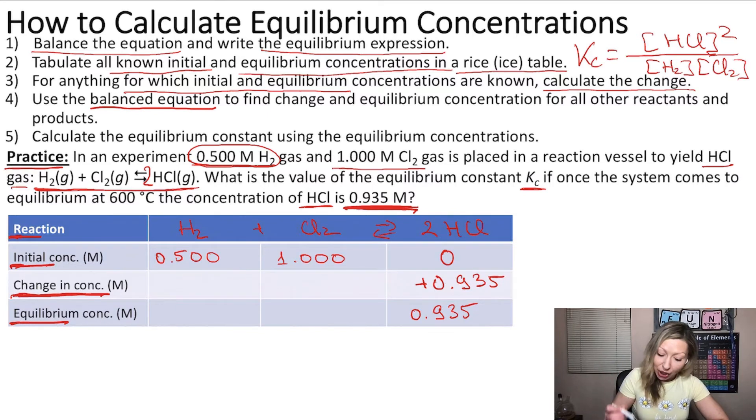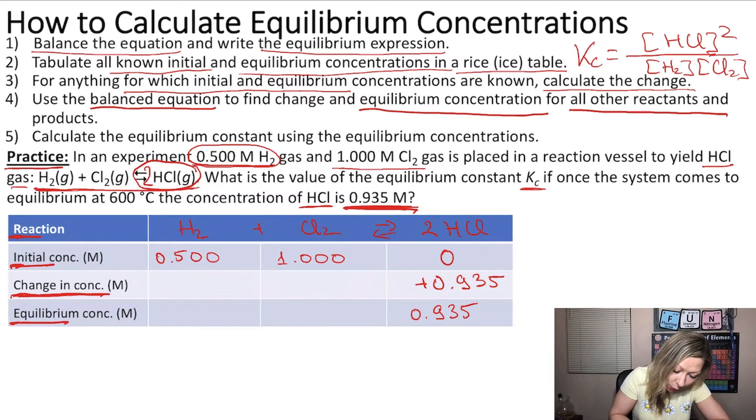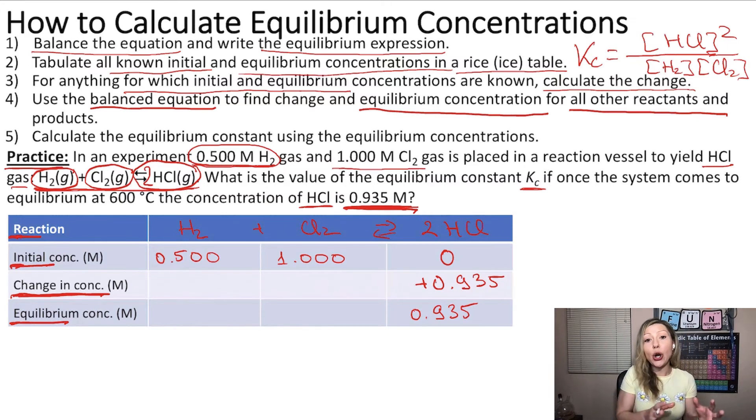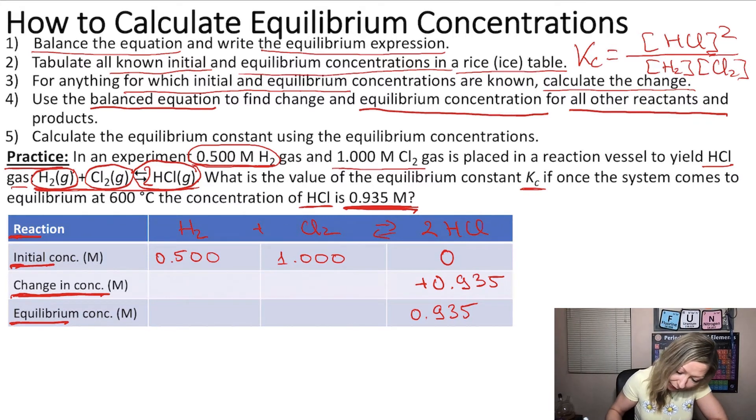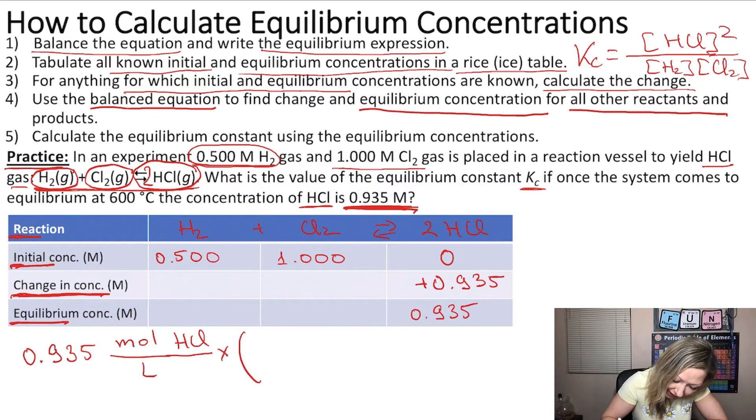Now we need to use the balanced equation to find the change and equilibrium concentration for all other reactants and products. So how do I do that? I need to use the reaction. So I know that when I formed 2 mols of hydrochloric acid gas, I only needed 1 mol of chlorine gas and 1 mol of H2 gas. And I know the change for HCl. So using this information, I can write out the following. When I have a change of 0.935 mol per liter of 1 mol per liter of HCl, I can convert that into, let's say, Cl2 gas.